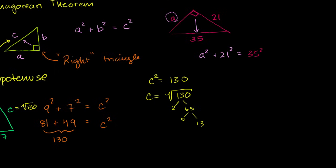Always remember: the c squared in the Pythagorean Theorem is always going to be the longest side of your right triangle — the side that is opposite the right angle. So a squared plus 21 squared equals 35 squared.